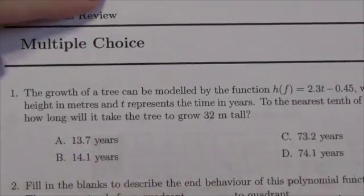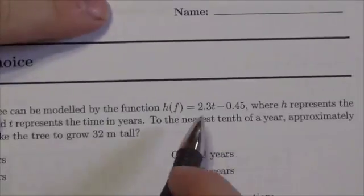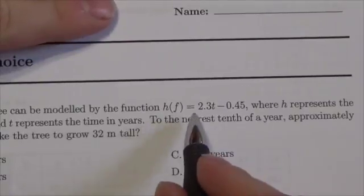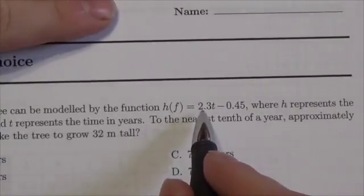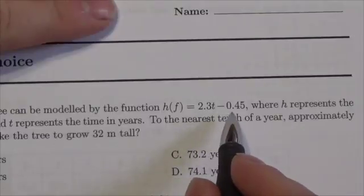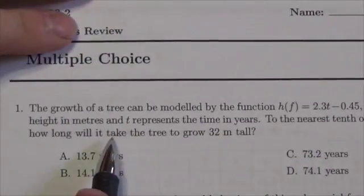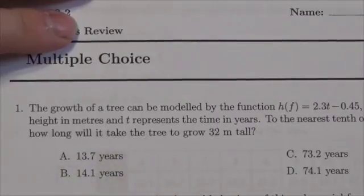Okay, so for this question we read that the growth of a tree can be modeled by the function h of t - oh that should be t - h of t equals 2.3t minus 0.45, where h represents the height of the tree in meters and t represents the time in years.